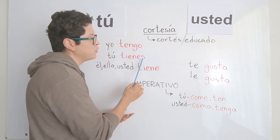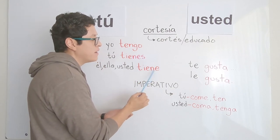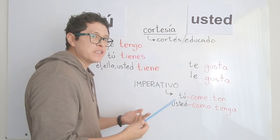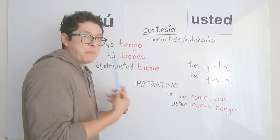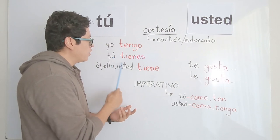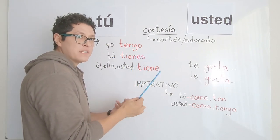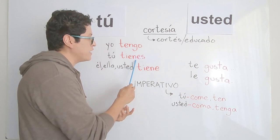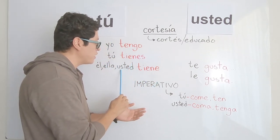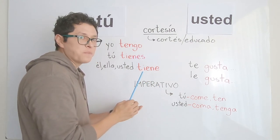A common mistake that Spanish learners make is saying 'usted tienes' — I have heard that mistake many times. They want to be polite so they use usted, but then they forget about the conjugation. The correct form is usted tiene, not usted tienes.